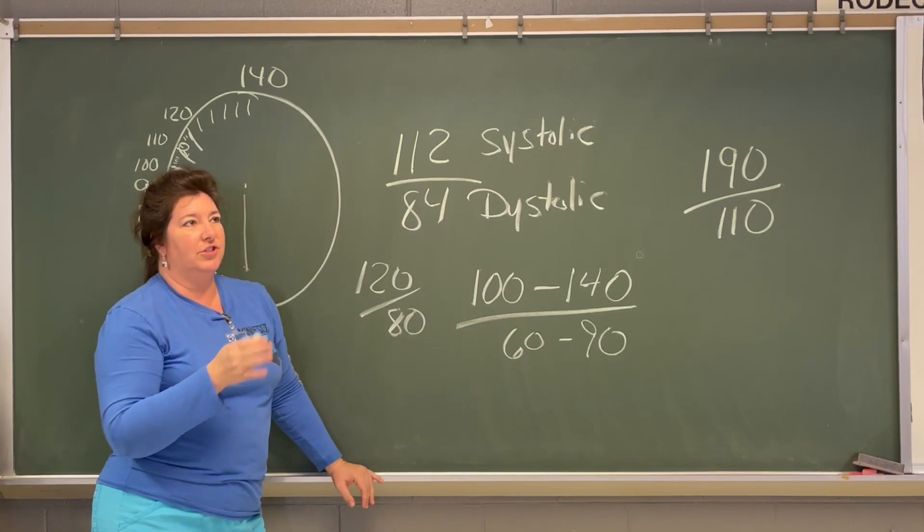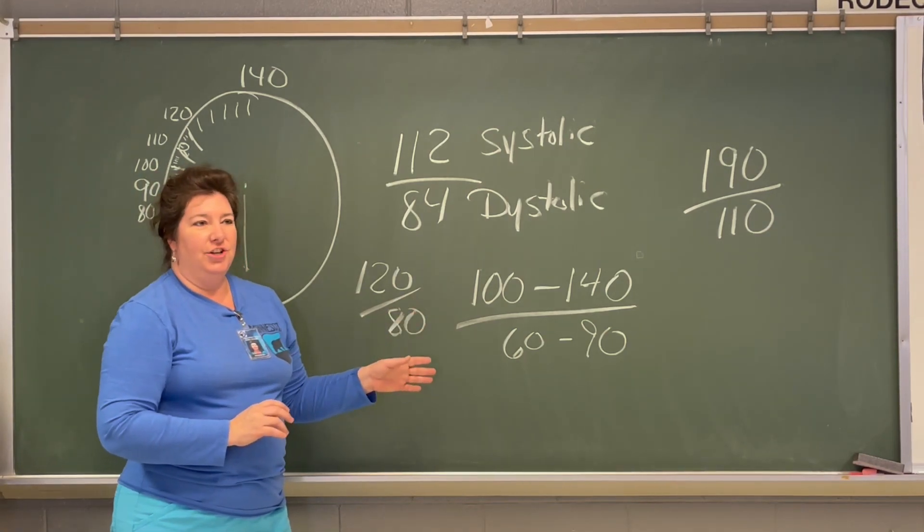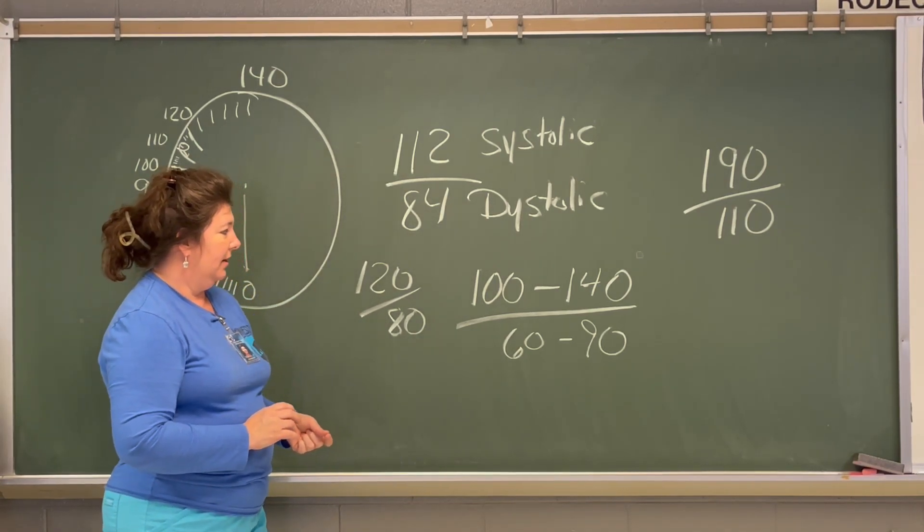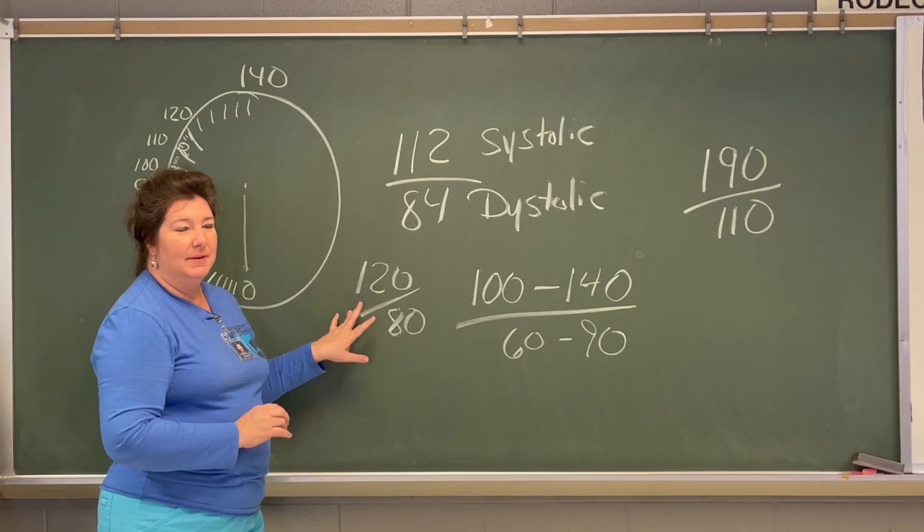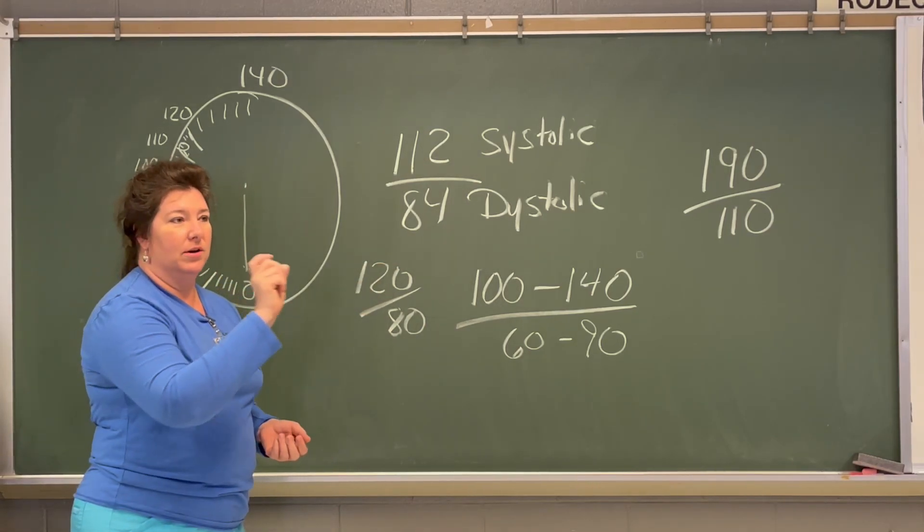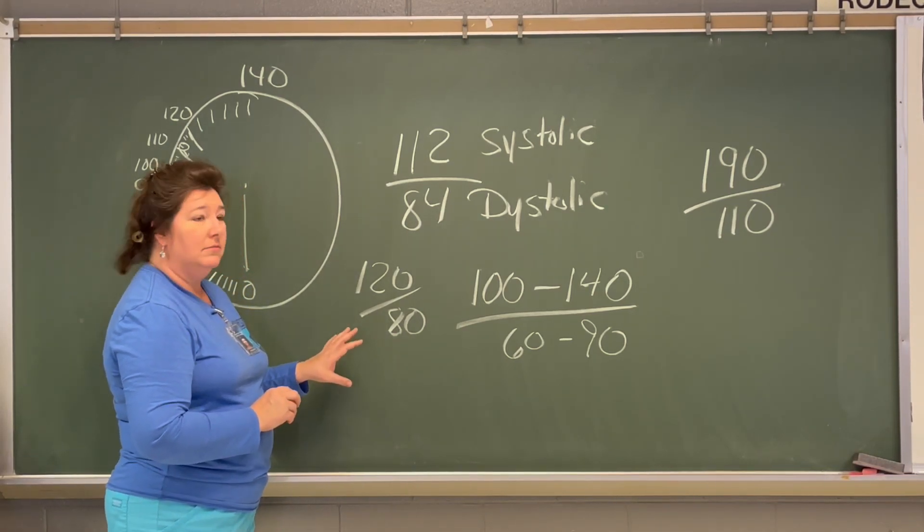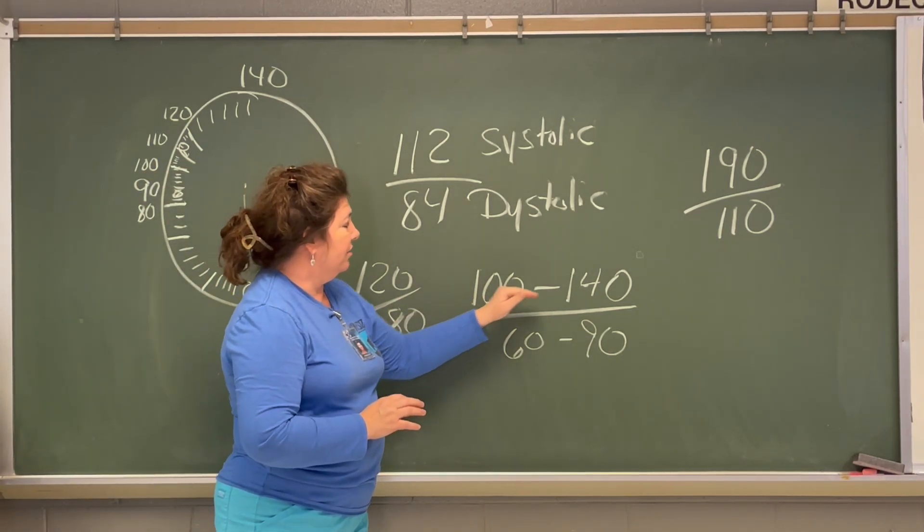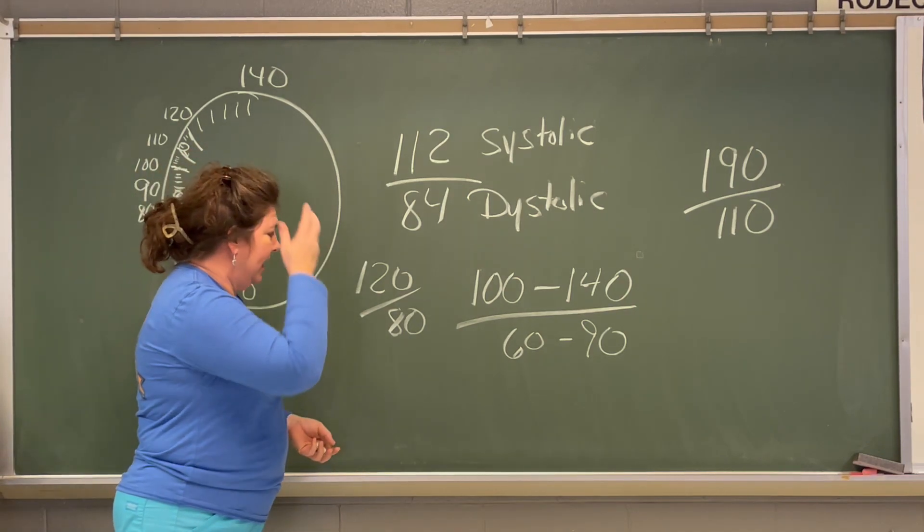So, on the test, they might ask you, which number is the systolic number? The top one or the bottom one? Now, here's kind of what students in the past have said is a tricky question. They'll ask you, what is the range of a blood pressure? Now, one of the answers is always 120 over 80. But that's not a range. So, people get really confident. They're like, ooh, 120 over 80 and they circle it or they hit the button and it's wrong. So, make sure the most common blood pressure would be 120 over 80. The normal range is between 100, 140, 60 to 90. Any questions about that?